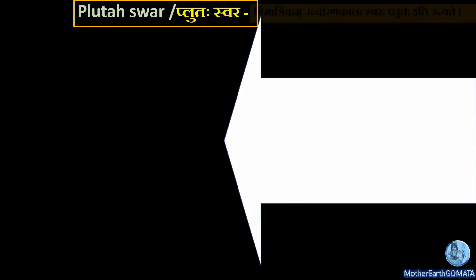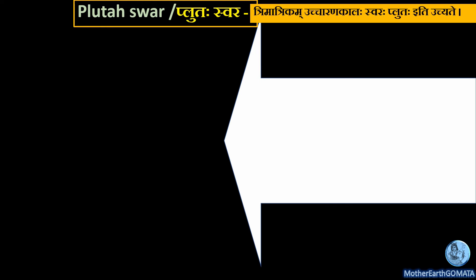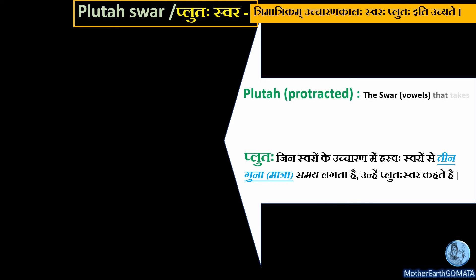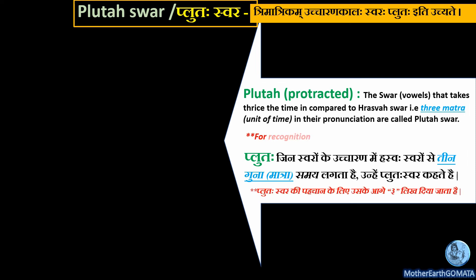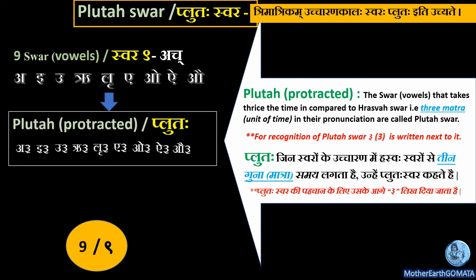Next is Pluta Swara: 'Tri matrikam uccaran kaal swara Pluta iti uchyate'. Pluta Swara, or protracted vowels, means the Swar that takes three times the time compared to Hraswa Swar — that is three Matra — in their pronunciation are called Pluta Swar. For recognition of Pluta Swara, the number 3 is written next to it. Only these nine Swar — that is 'Ach' — have a Pluta form; you will never find a Vyanjan with a protracted or Pluta form. In Vedic Sanskrit you will see many examples of Pluta Swara as more emphasis is placed on pronunciation of Mantra.